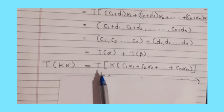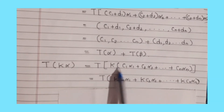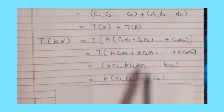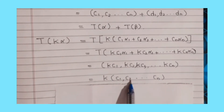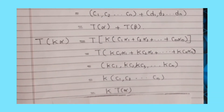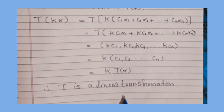Next, T(kα) = T(k(c₁α₁ + c₂α₂ + ... + cₙαₙ)) = T(kc₁α₁ + kc₂α₂ + ... + kcₙαₙ) = (kc₁, kc₂, ..., kcₙ) = k(c₁, c₂, ..., cₙ) = k·T(α). Therefore T is a linear transformation.